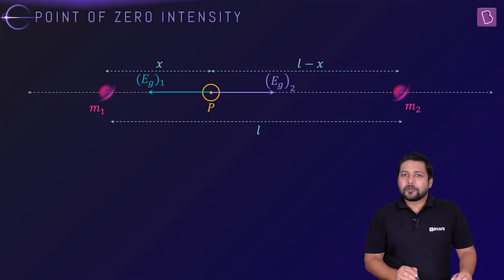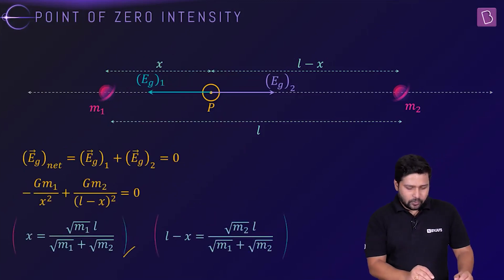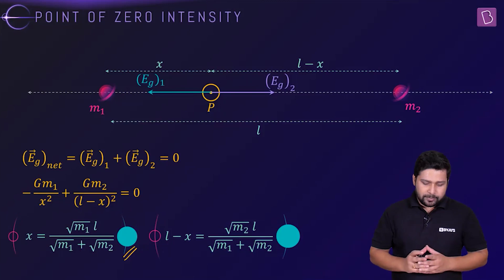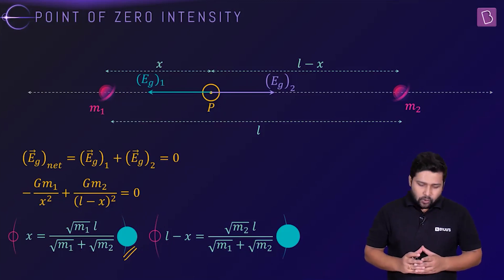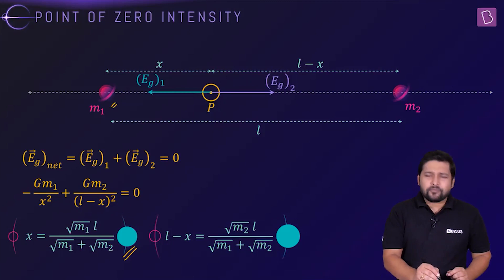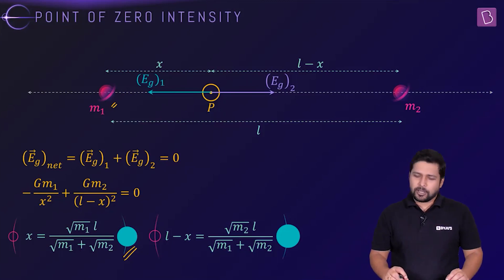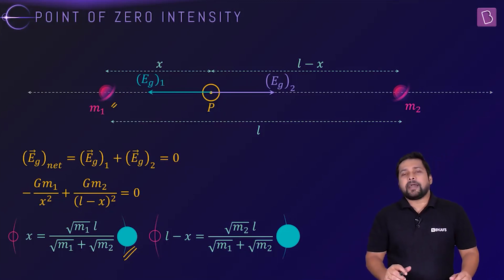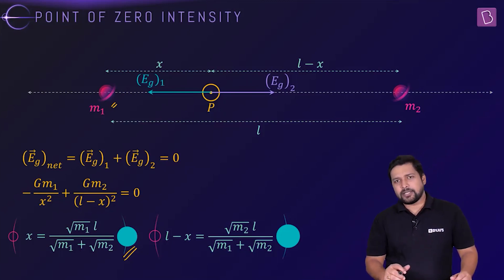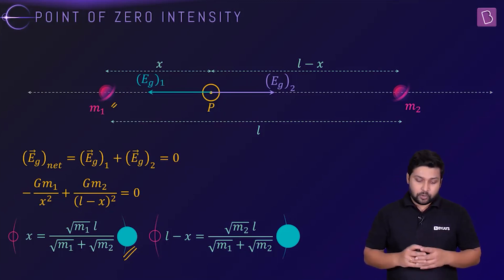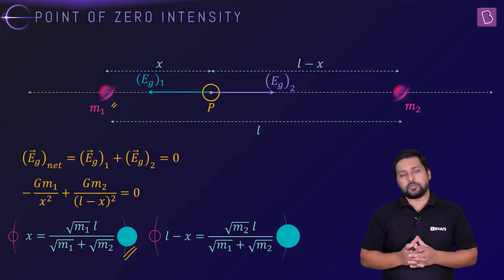When you do that, you end up getting the expression for x: x equals root of M1 times L divided by root of M1 plus root of M2. We have also taken the condition that M1 is the smaller mass, so the neutral point is slightly closer to M1. This is how you find the point where gravitational field intensity equals 0 for a two-mass system along the line joining the two masses.